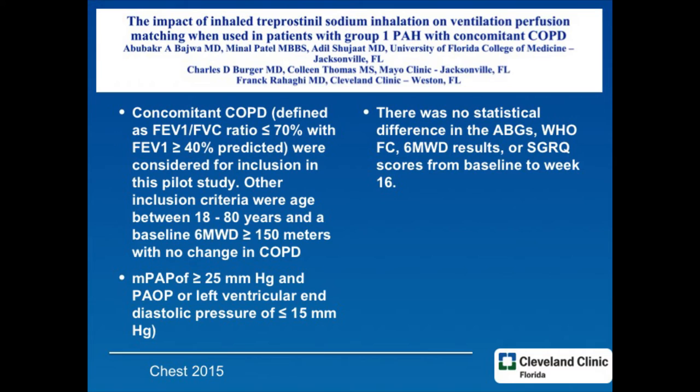What are the costs? The fear is VQ mismatch — the lungs intelligently close off flow to areas that are emphysematous or destroyed, and by treating the patient you might disturb that. The Florida group considered using inhaled drugs to see if, because they get delivered and are more effective in functional areas of the lung, they wouldn't cause VQ mismatch. In this proof-of-concept study, we looked at patients with COPD and standard definitions of pulmonary hypertension, started them on inhaled treprostinil, and looked at the effects on their ABGs, WHO classification, and six-minute walk test.